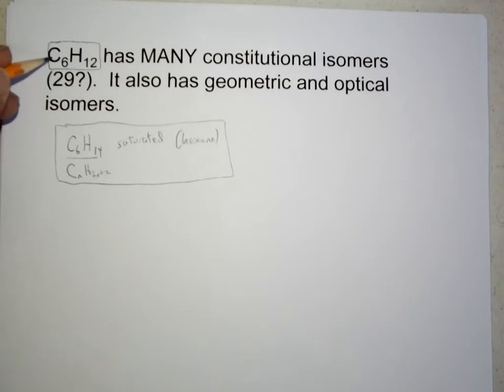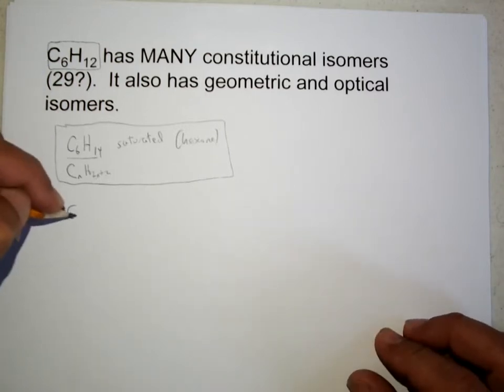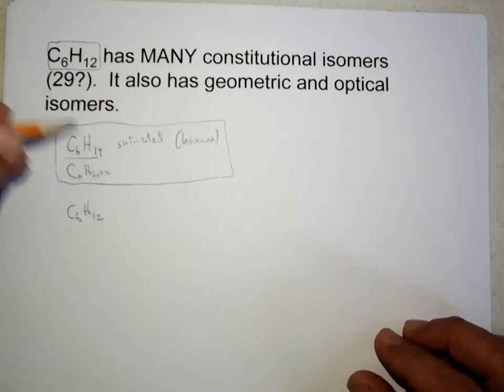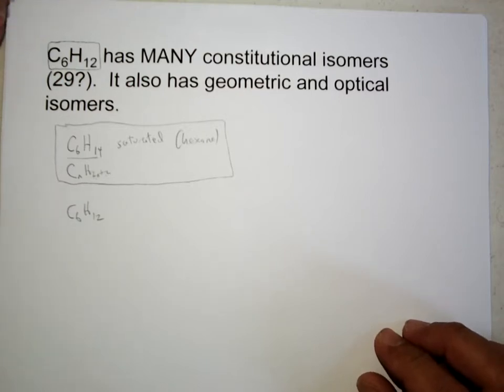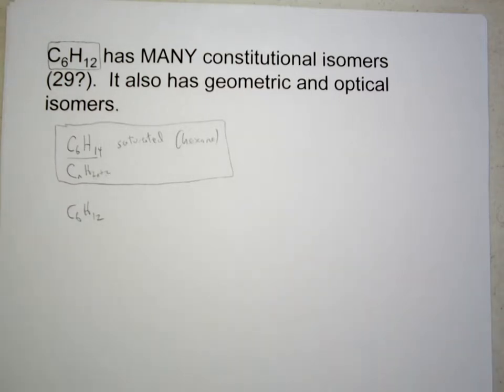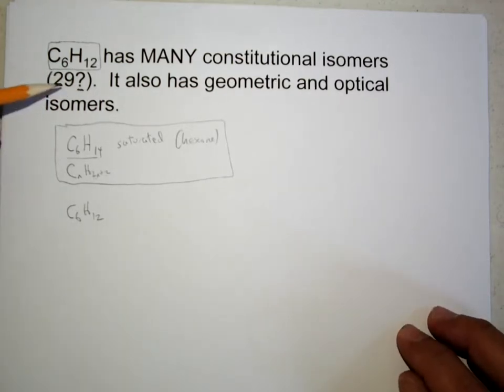Now if we go to C6H12, we're going to have many constitutional isomers. When I googled to see how many isomers there were of C6H12, there were numbers from 10, 12, 15, 22. I think I counted 29 constitutional isomers when I quickly worked it out. I didn't make sure I was completely thorough, hence the question mark, but there's many constitutional isomers.